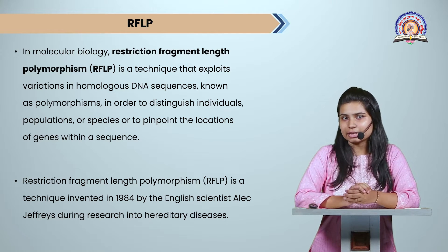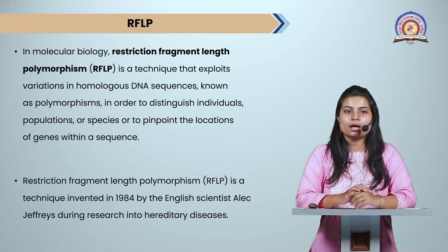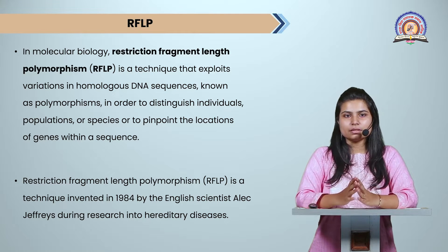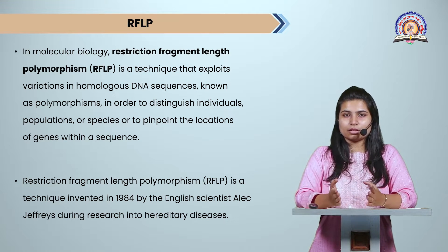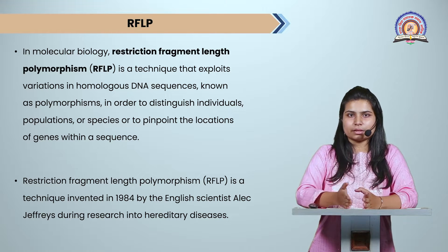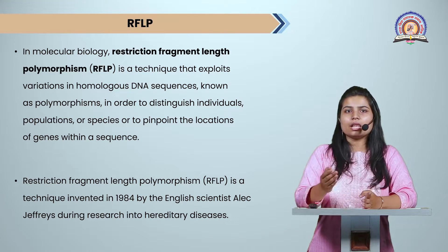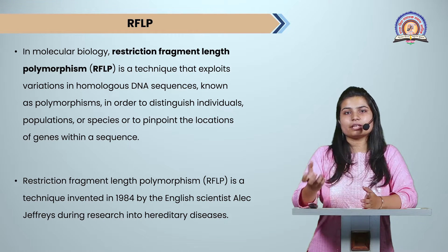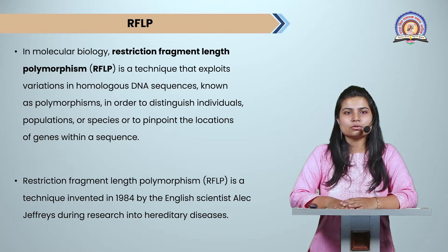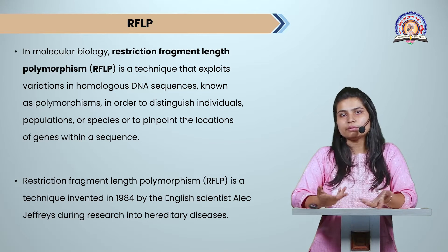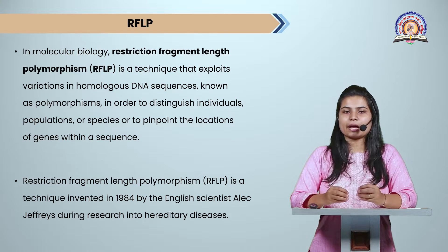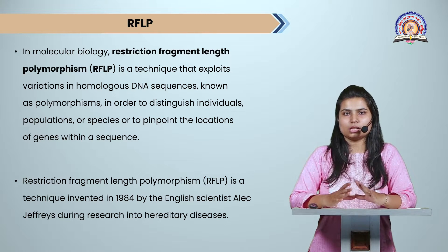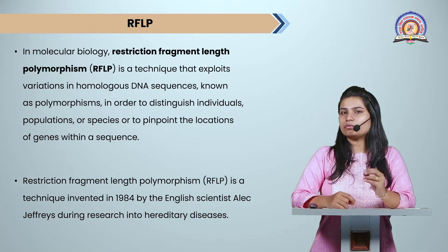The first technique is RFLP — Restriction Fragment Length Polymorphism. From the full form alone you can understand half the process: restriction enzymes come and cleave your DNA to get the restriction fragment, and then we identify the length of that fragmented DNA — that is length polymorphism. In molecular biology, this is a technique that exploits variation in homologous DNA, where the term variation plays an important role.